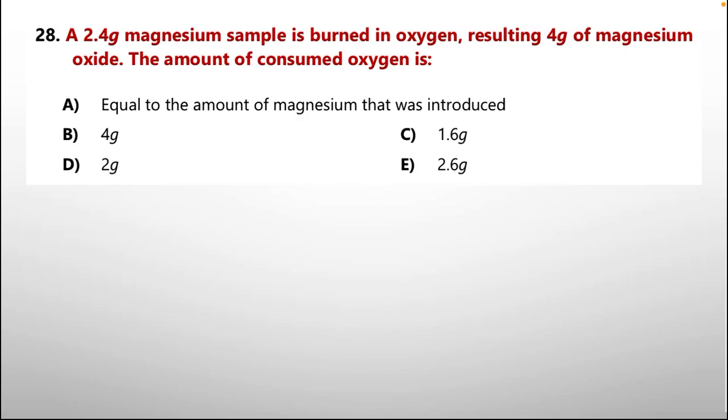Question number 28. A 2.4 grams magnesium sample is burned in oxygen, resulting 4 grams of magnesium oxide. The amount of consumed oxygen is. Options are: equal to the amount of magnesium that was introduced. B. 4 grams. C. 1.6 grams. D. 2 grams. E. 2.6 grams.